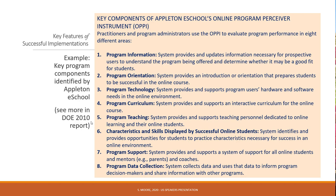In addition to having courses and curriculum, around that there's program information and the ability to provide updates for prospective users, and creating an orientation — an introduction that prepares students for how to be successful in the online course. With younger learners, you also need an orientation for parents or caretakers so that they get oriented to the system and understand what it means to be successful.